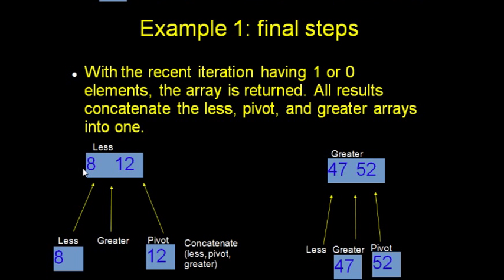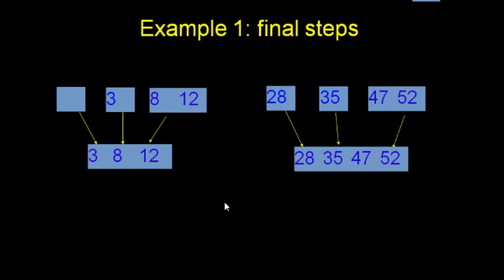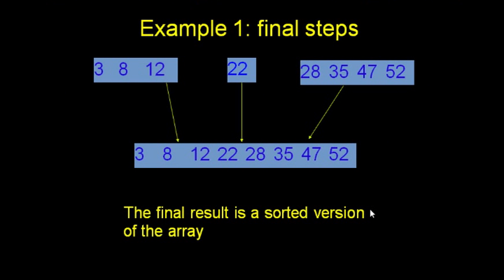So in this case, on the smallest side, we have 8 and 12. On the greater side, we have 47 and 52 combined. I don't show everything, that would take too much to show all in one slide. But if we continue, we would combine 3, then 8, and 12. On the other side, we would combine 28, 45, 47, and 52. And when we're done, we should have the original less than array that we started with, the original pivot, and the original greater than array that we started with. And if we combine those in the order that they are in, we should have a sorted version of the array that we started with. Good.